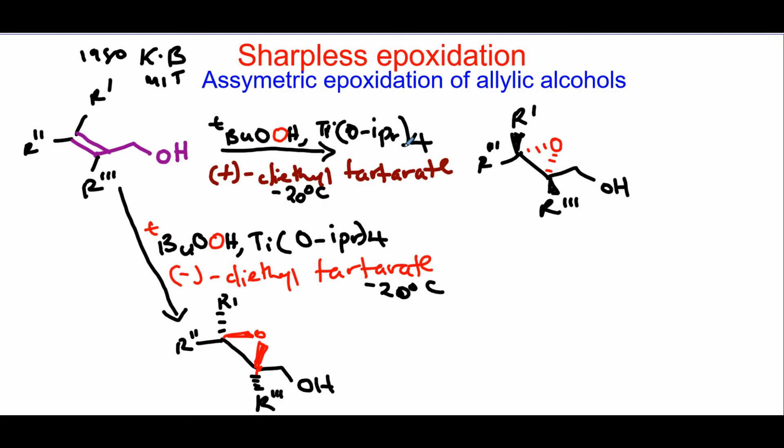And you also have a chiral ligand which is diethyl tartrate, which could either be the plus version or the minus version. So the choice of the specific stereoisomer of the tartrate will dictate the stereochemistry of the epoxide.